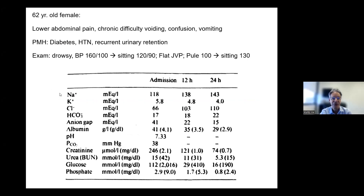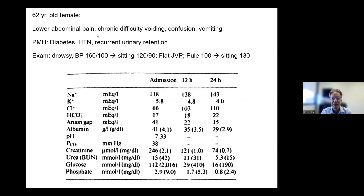This is a 62-year-old female who had a history of lower abdominal pain, chronic difficulty voiding, confusion, and vomiting. She had a past medical history of diabetes, hypertension, and recurrent urinary abnormalities.